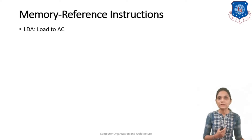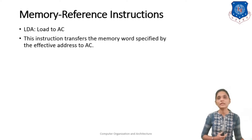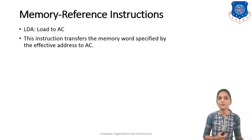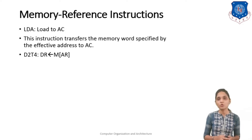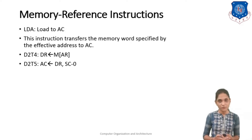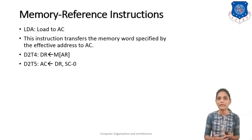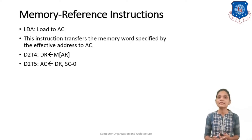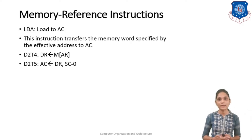If we think about the LDA instruction, this instruction is used to load the content into the accumulator. This instruction transfers the memory word specified by the effective address to the accumulator. For that you first need to store the content into DR, and then transfer it into the accumulator. So at D2·T4, the memory location's content pointed by AR is stored into DR, and at D2·T5, this DR content is stored into the accumulator.